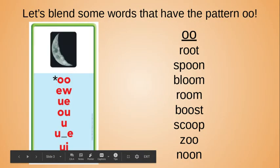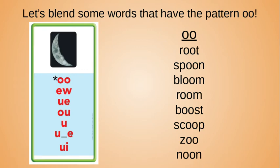Let's start by blending some words that have the o-o pattern. Remember, whenever you see o-o, it's making the ooo sound. So let's blend some of these words, starting with the first one. R-oo-t, root. S-p-oon, spoon. B-l-oom, bloom. R-oom, room.